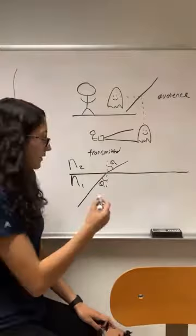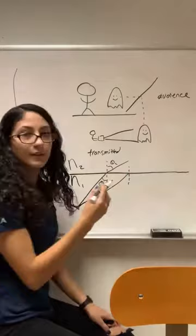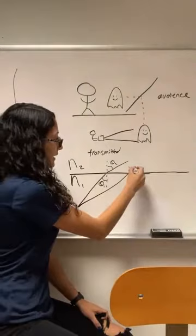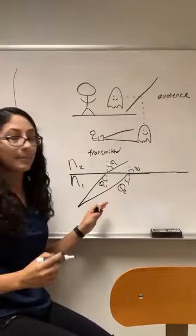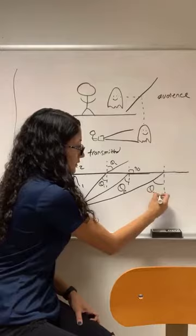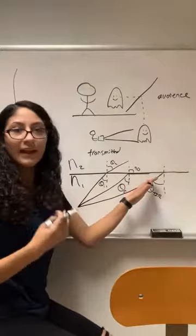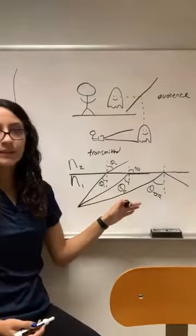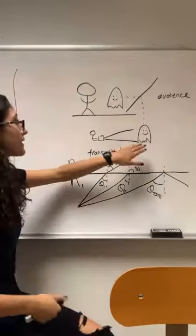Then we have a case where light is coming in and hitting at something called the critical angle, where it just stays within the same material at 90 degrees — we call this the critical angle. And then at angles greater than this critical angle, you have what's called total internal reflection, where the incident light ray is being completely reflected back into the material that it was in.